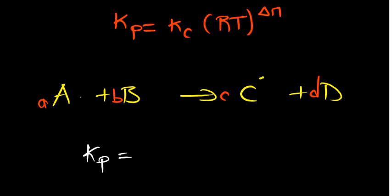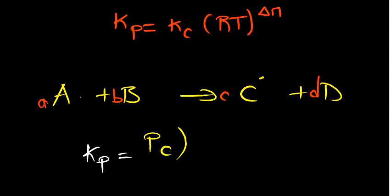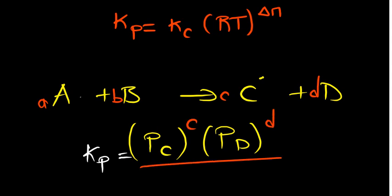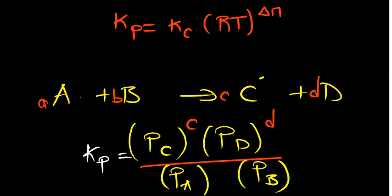So for the Kp expression, for products we have the pressure of C raised to the power c, and the pressure of D raised to the power d. For the reactants on the denominator, we have the pressure of A and the pressure of B, raised to their respective powers a and b. This is the Kp expression written in terms of partial pressures.